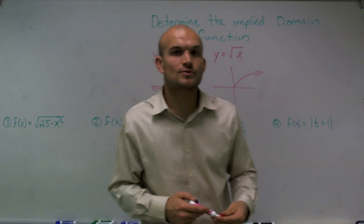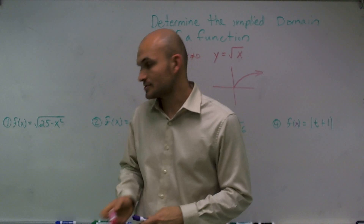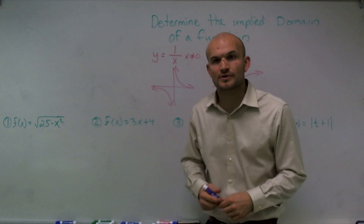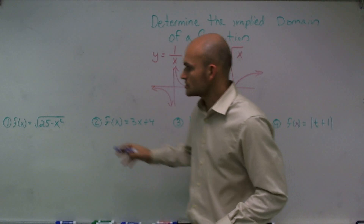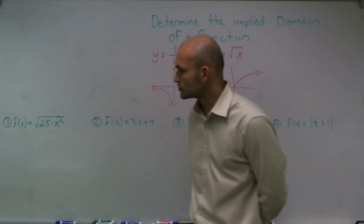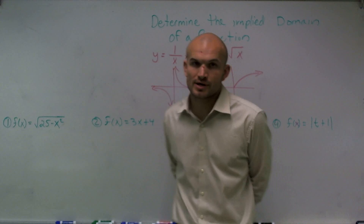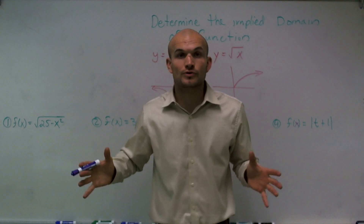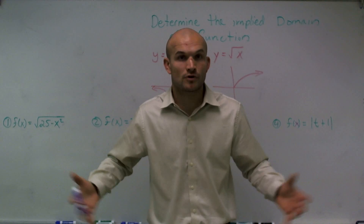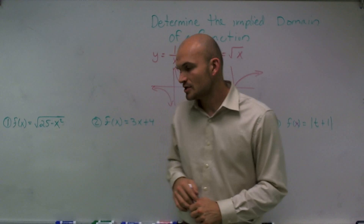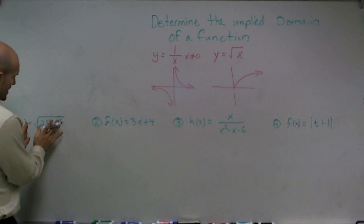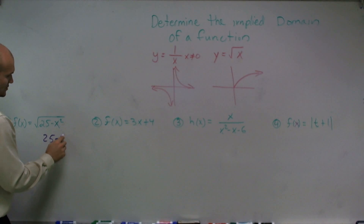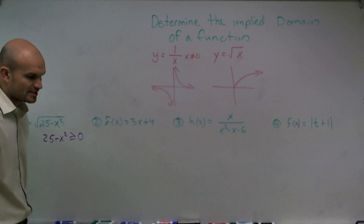Now, how is this going to work when we're looking at regular equations? I wrote down four of them that I'd like to go through with you, and then I'll give you a couple to practice. The first one is f of x equals the square root of 25 minus x squared. So as long as what's under my root is positive, I'm going to have a domain for it, which we call the implied domain. Whenever I have a number under the radical, I'm going to write it as 25 minus x squared has to be greater than or equal to 0.